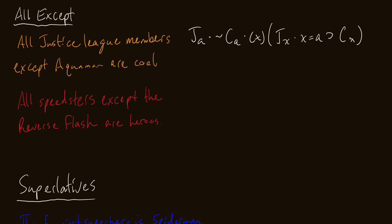If I want to say 'all speedsters except the Reverse Flash are heroes,' I first look at the Reverse Flash: the Reverse Flash is a speedster, and the Reverse Flash is not a hero. Then for all x, if x is a speedster and x does not equal R — does not equal the Reverse Flash — then we can conclude that speedster is a hero. Because all speedsters except the Reverse Flash are heroes. So we have our subject being contrasted, the qualities assigned to them, and then a universal conditional saying: if you have this quality and you're not this person, then we can conclude this about them.